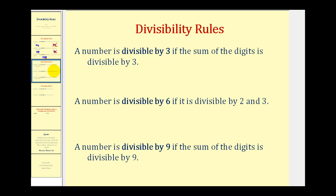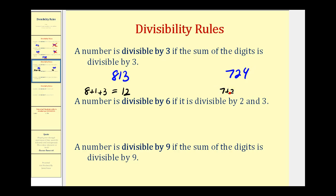Now let's take a look at the number 3. A number is divisible by 3 if the sum of the digits is divisible by 3. For example, if we compare 813 and 724, we sum the digits: 8 plus 1 plus 3 gives us 12, and 7 plus 2 plus 4 gives us 13. Since 12 is divisible by 3, so is 813. However, 13 is not divisible by 3, and therefore 724 is not divisible by 3.